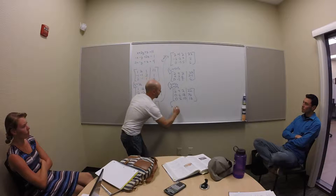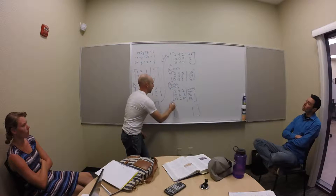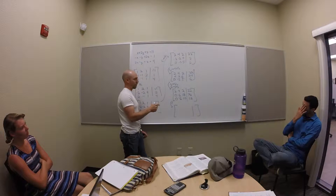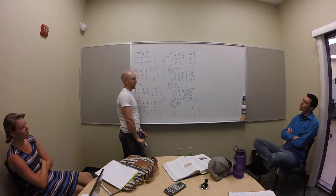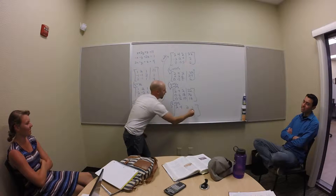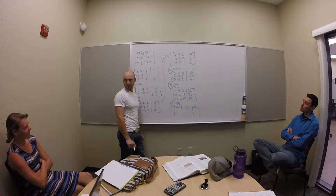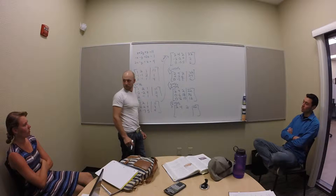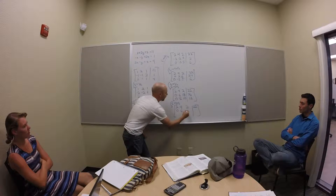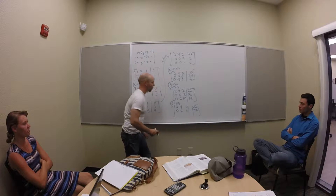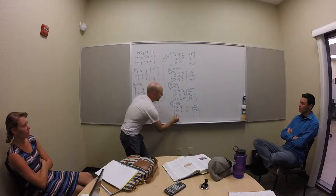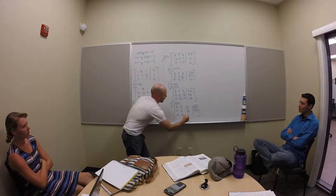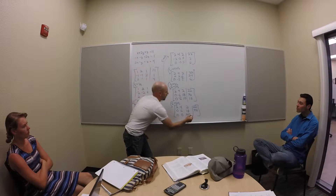My next stage: I'll take row two plus row three and put it into row three. So my top stays: 2, 4, 2, 22. My middle stays: zero, 6, 18, 72. And my bottom row becomes: zero, zero, 28, 84.